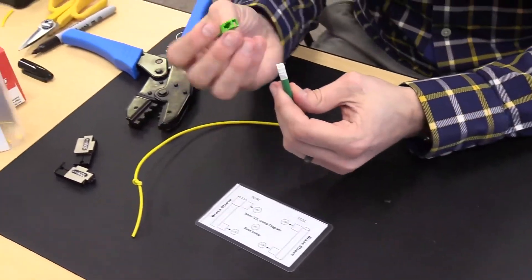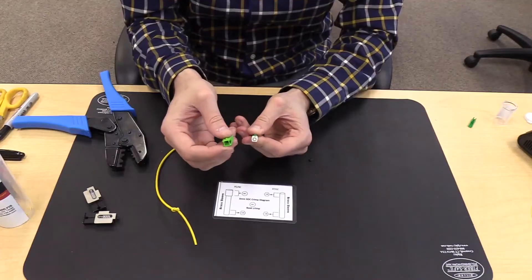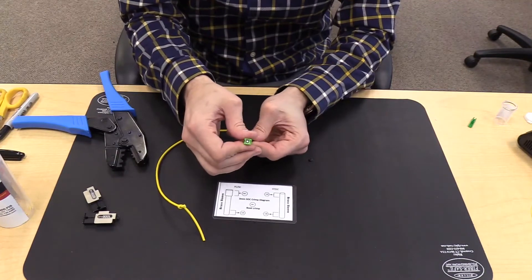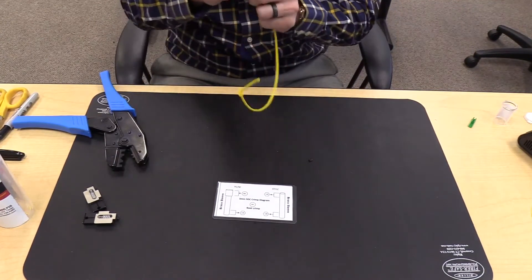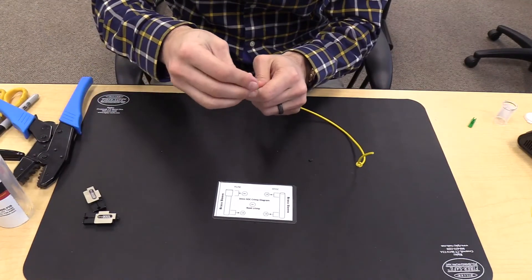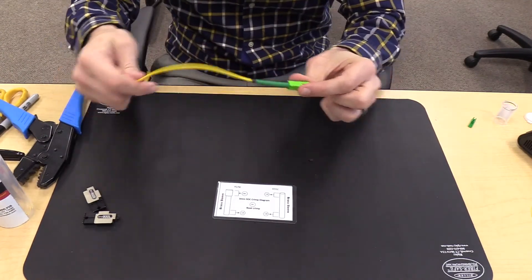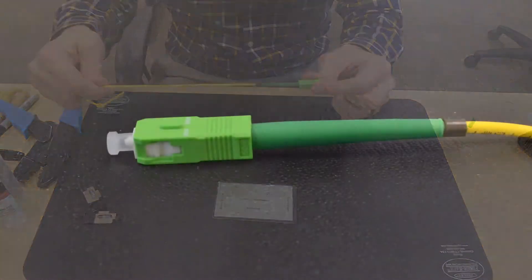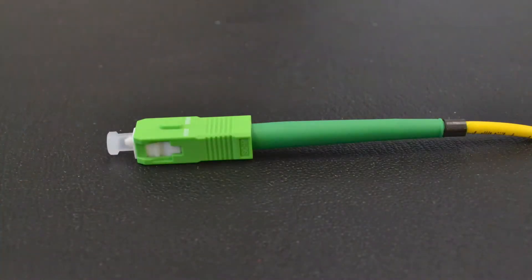Take your SC housing, match up the key ways, and slide it on. An audible click should be heard. Put the dust cap on. The termination of the FIS 3mm Armadillo splice-on connector is now complete.